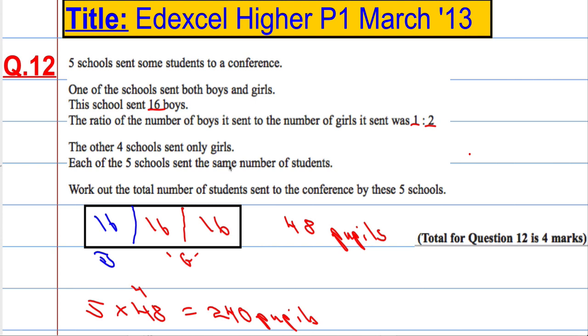240 pupils in total. And what looked like a really complicated question with lots of information was fairly straightforward in the end.